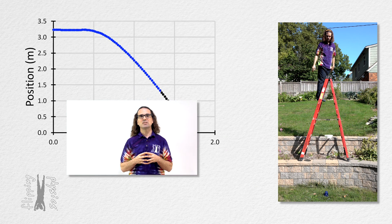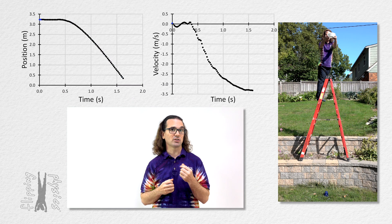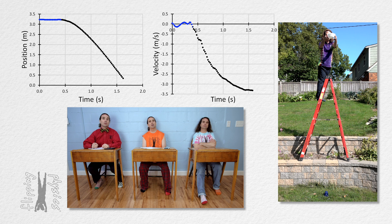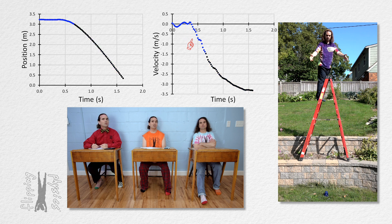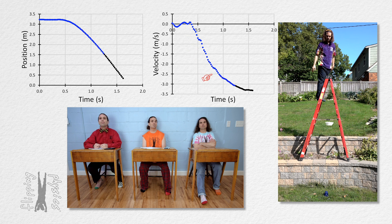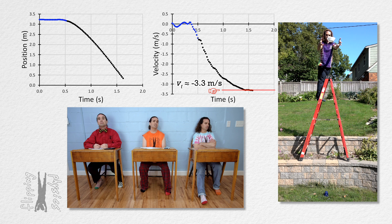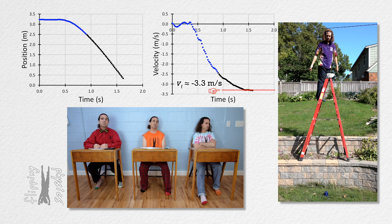The velocity as a function of time graph starts out at zero, just like the slope of the position graph. The velocity then decreases in value and seems to level out, becoming constant at roughly negative 3.3 meters per second, which is the terminal velocity we saw in the position vs. time graph.